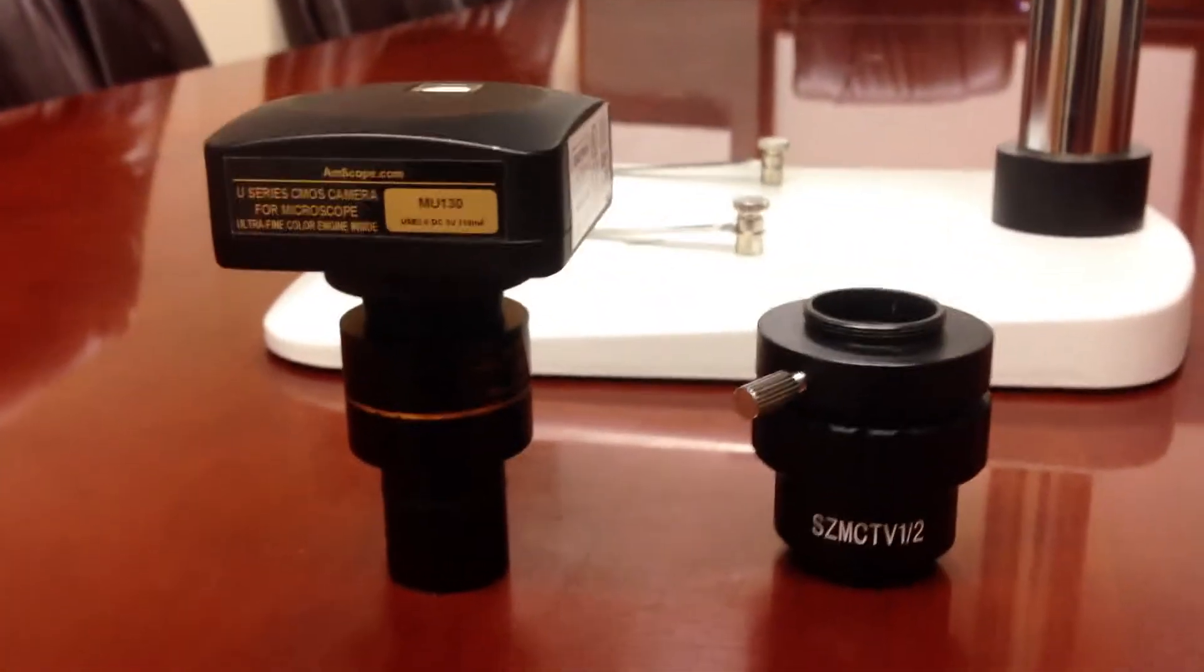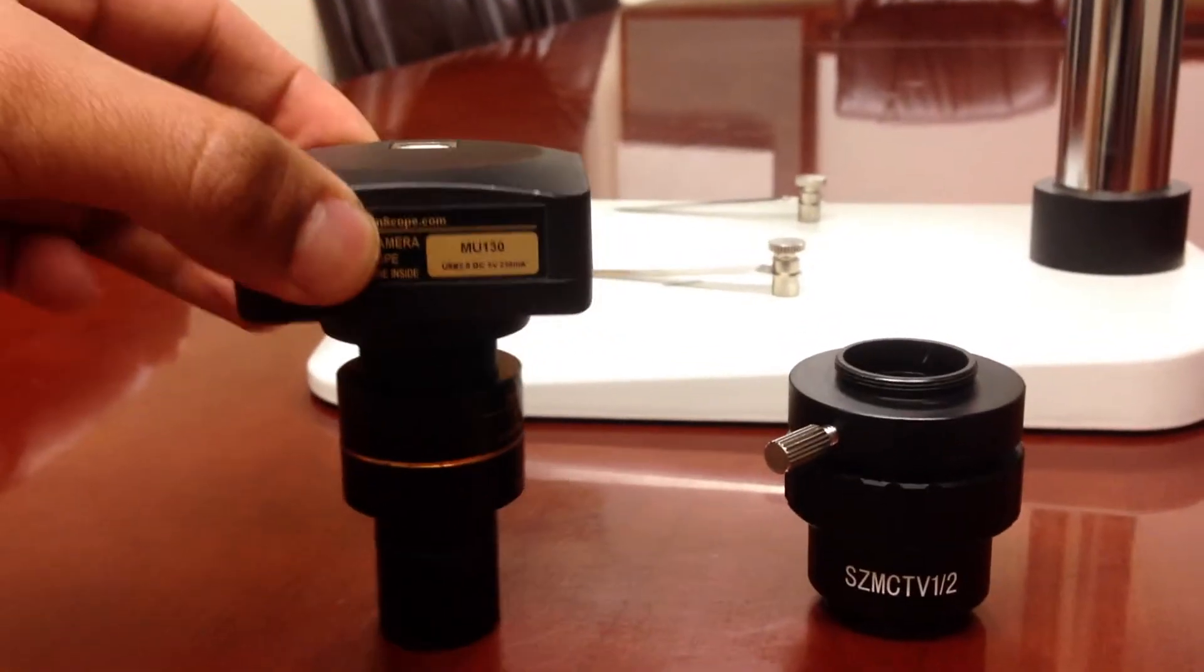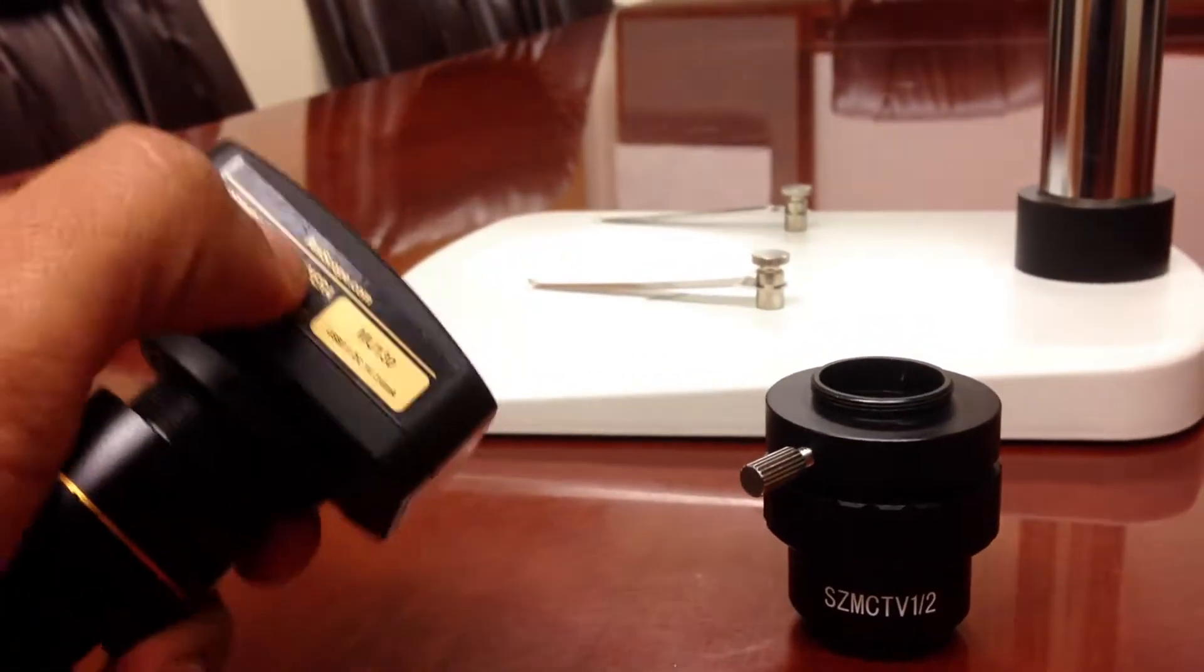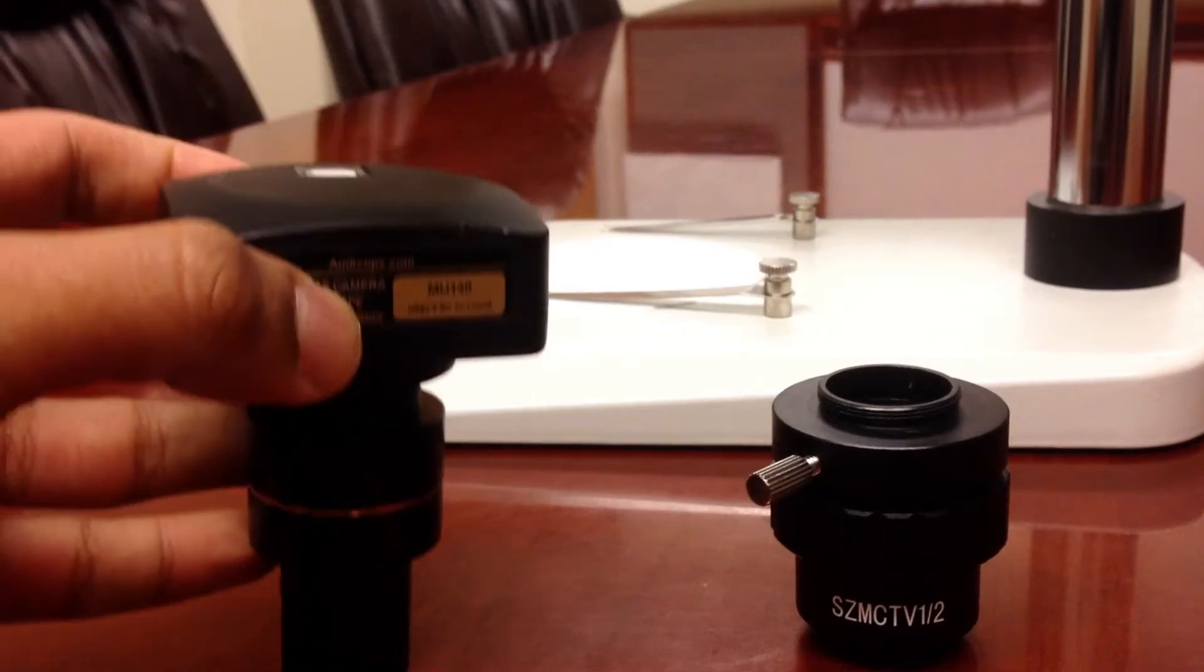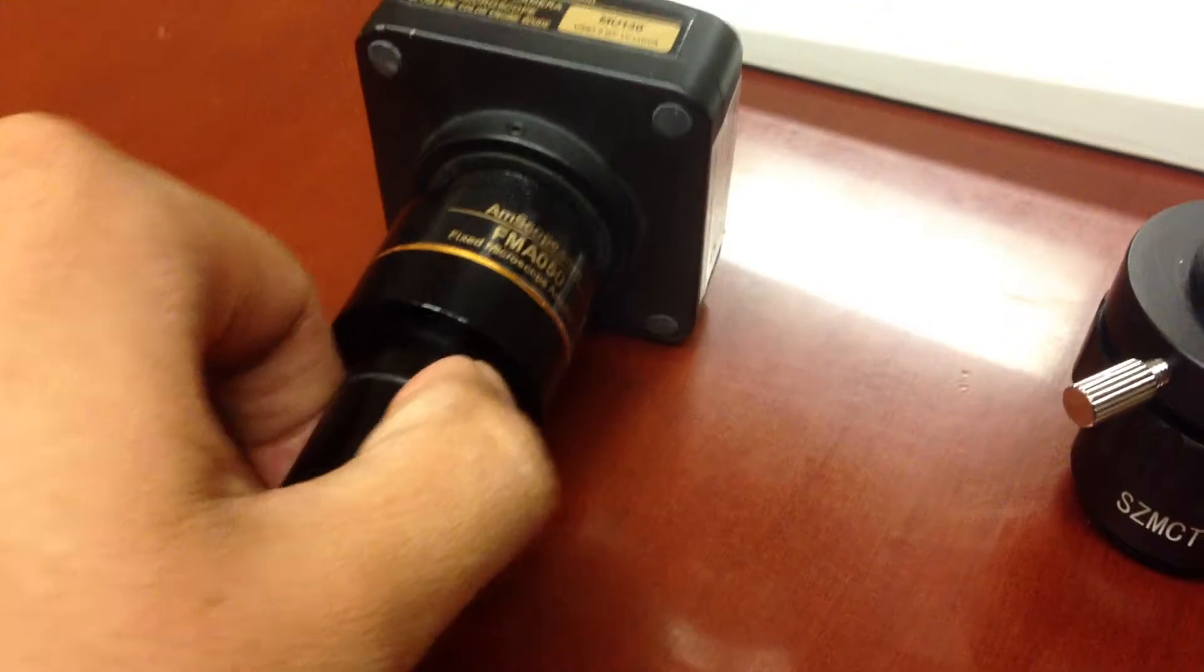So your MU, MA, or MT series camera will come with two parts. The first part, the top part, this is the camera part that has the sensor. And the long tube that's attached to it, this is called the reduction lens.